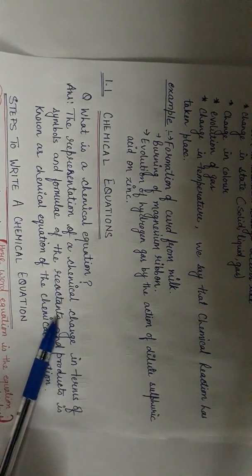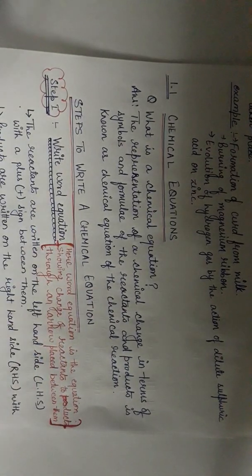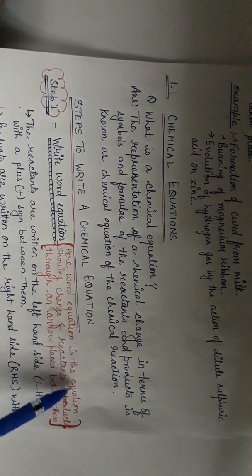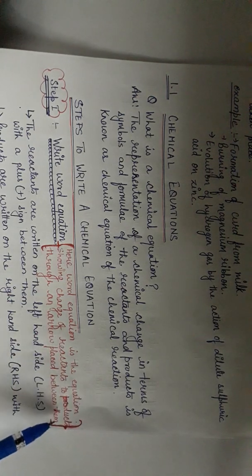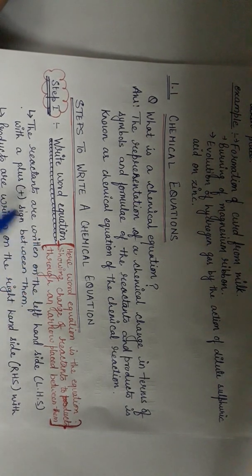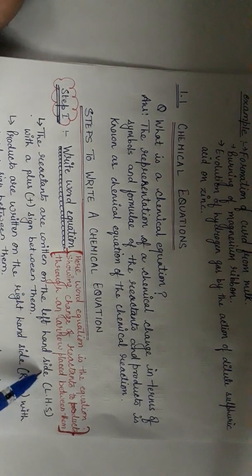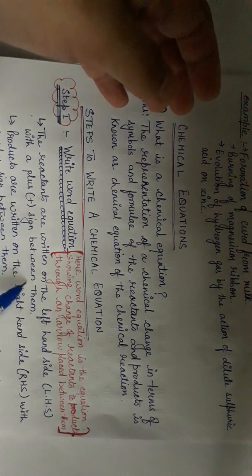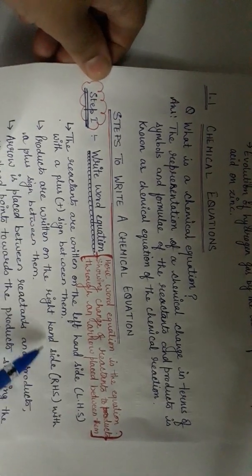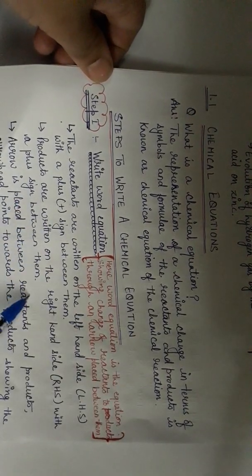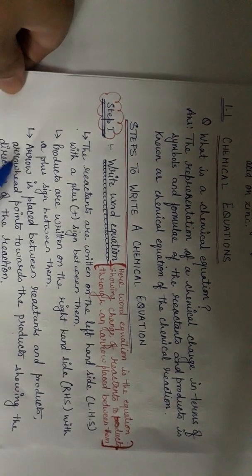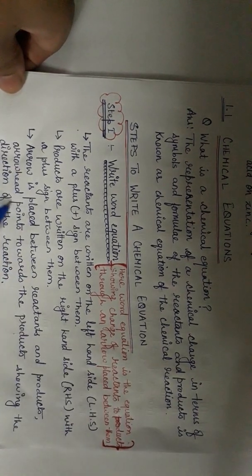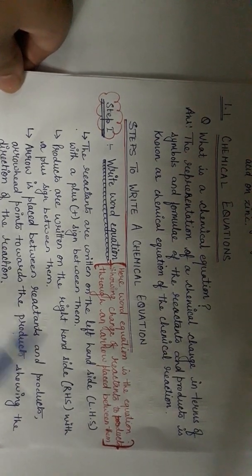So how can we write the chemical equations? There are certain steps to write the chemical equation. Step 1 is to write the word equation. The word equation is the equation showing the change of reactants to products through an arrow placed between them. The reactants are written on the left-hand side with a plus sign between them. A plus sign is used to combine different elements or compounds. An arrow is placed between the reactants and products, and the arrowhead points towards the product showing the direction of the reaction.